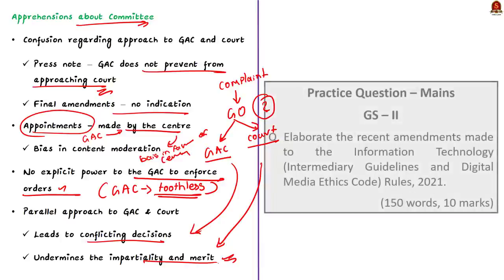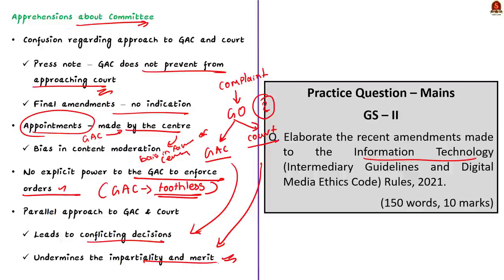That's all regarding this discussion. We saw about the recent amendments made to the IT Rules 2021, the implications of the amendments, the grievance appellate committee, and the issues associated with it. We also saw the importance of knowing about recent amendments made by the government. With this, let us conclude and take up the next news article.